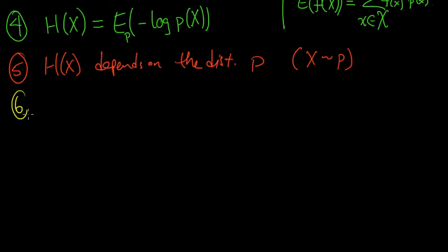So 6, 5 will lead to 6, 6 is a bit of notation. This notation can be confusing at first because it's actually ambiguous. Oftentimes, it will be convenient to write h of p, define this to be h of x when x is distributed according to p.